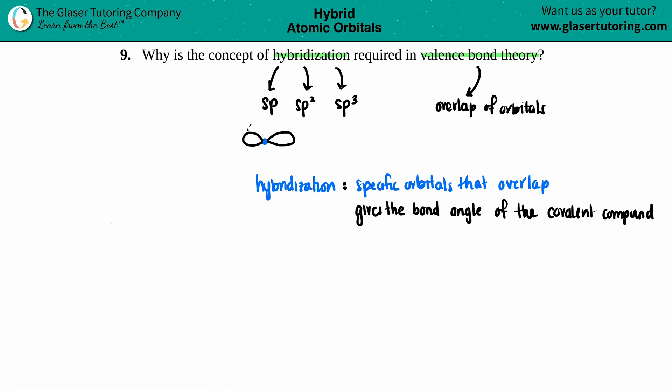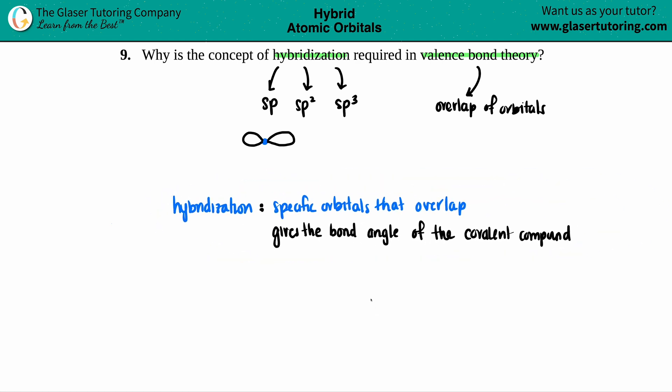But these are the reasons why hybridization is required in valence bond theory, because they actually tell you what specific orbitals are overlapping, and because you have those specific orbitals and how many there are, that gives the bond angle of the actual compound or the actual element that is making the bond. So it gives the bond angle of the element bonding. And there you go.